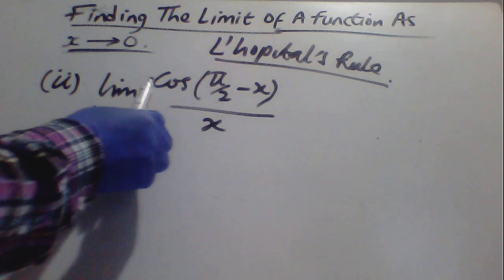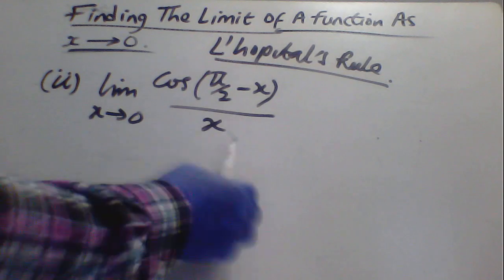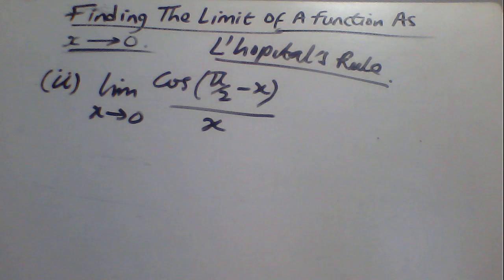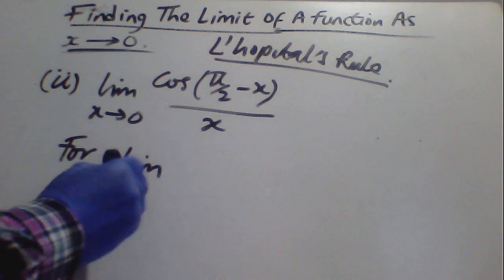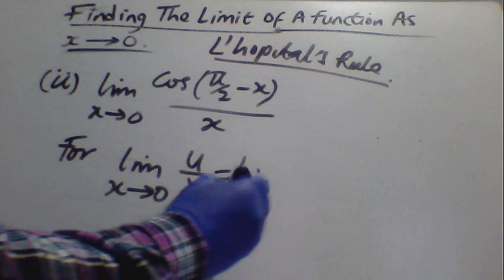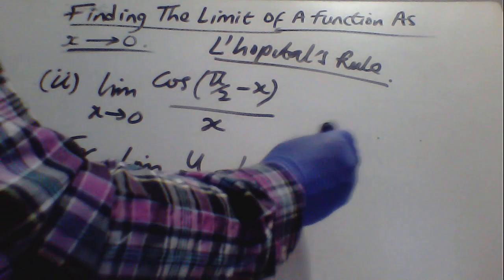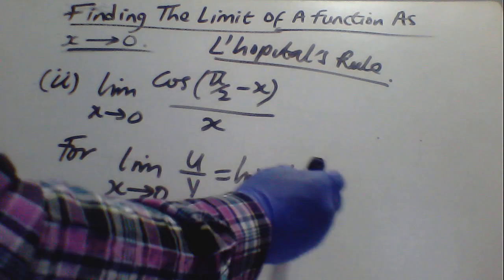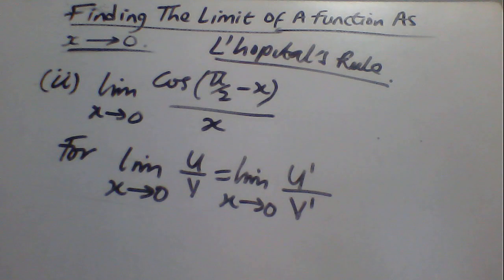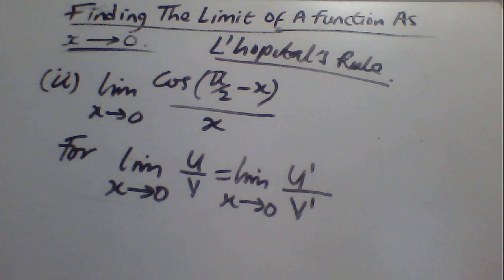By L'Hôpital's rule, if we differentiate the numerator and differentiate the denominator, we can concentrate on the numerator. For a given function, lim(x→0) of U/V is the same as lim(x→0) of the derivative of U over the derivative of V — you differentiate each separately, not as a quotient, but as separate entities.